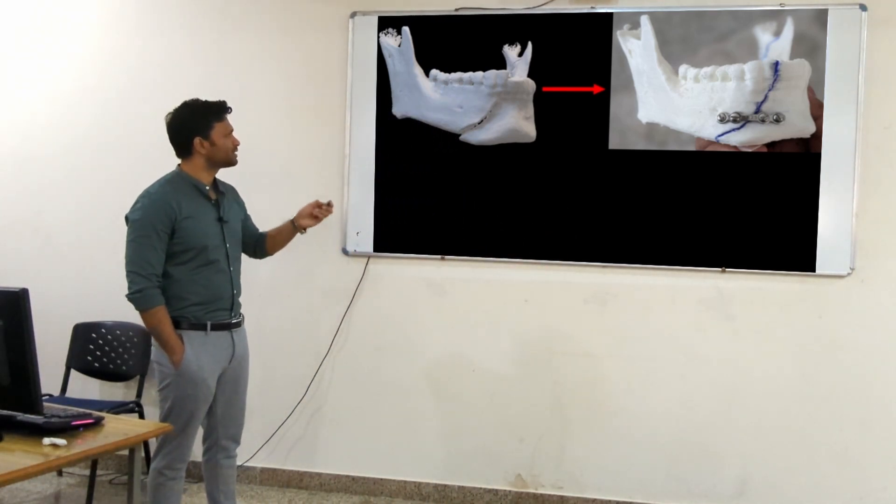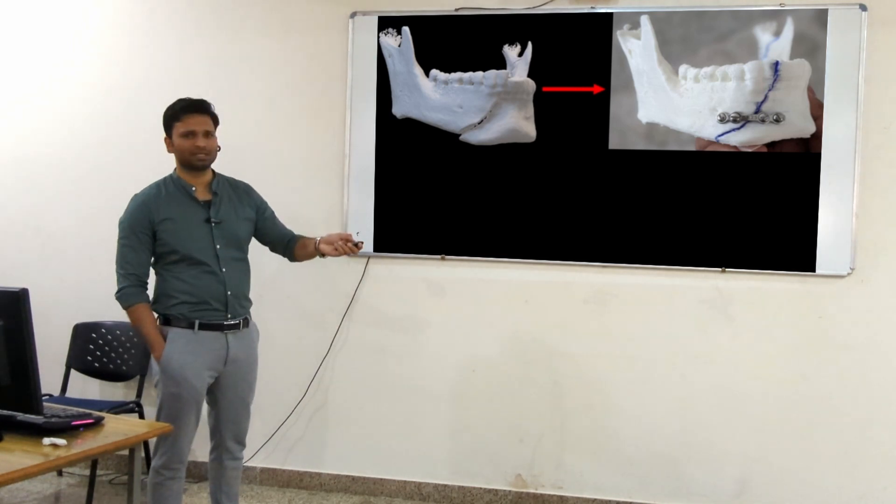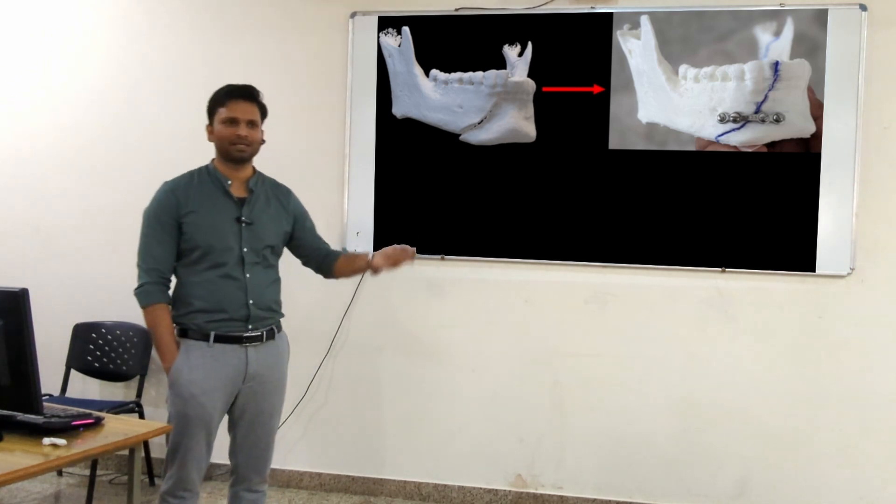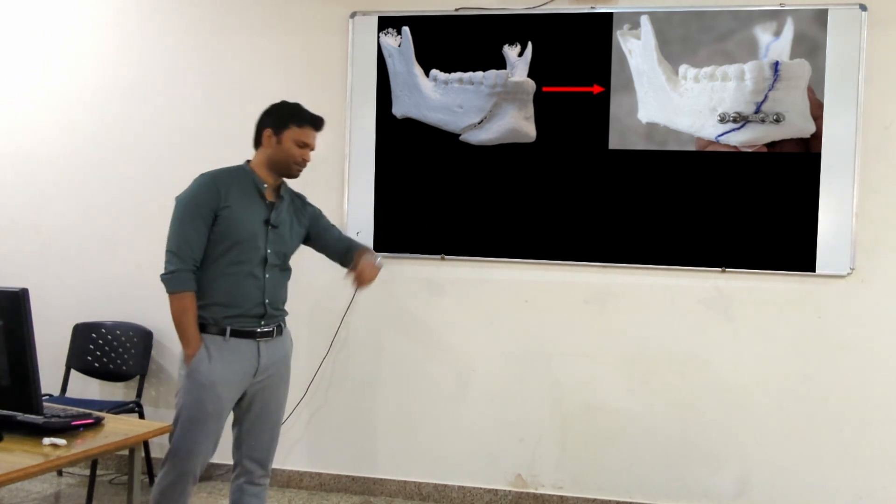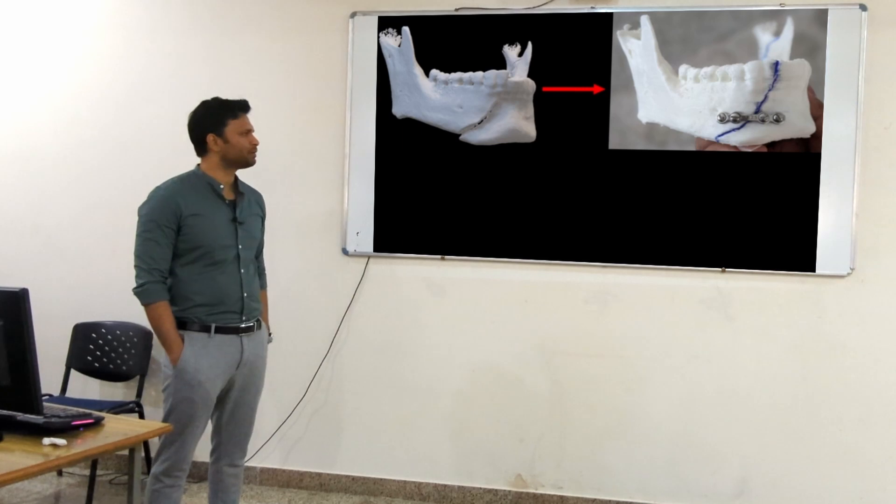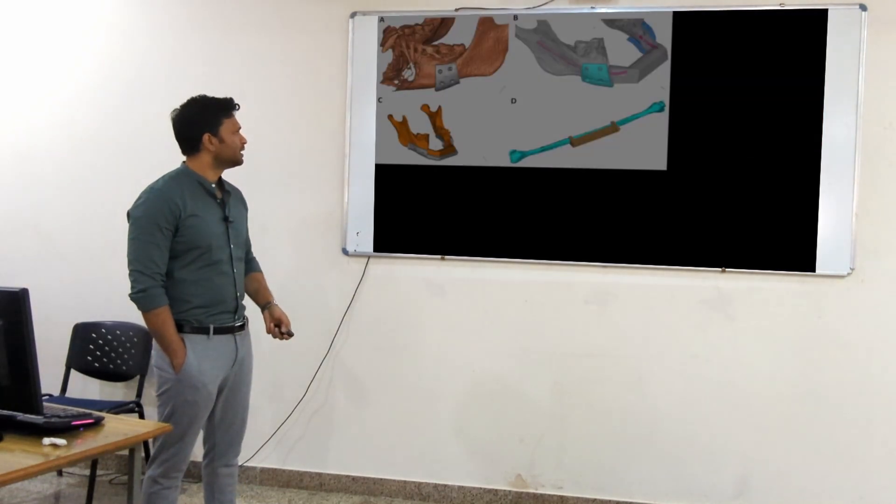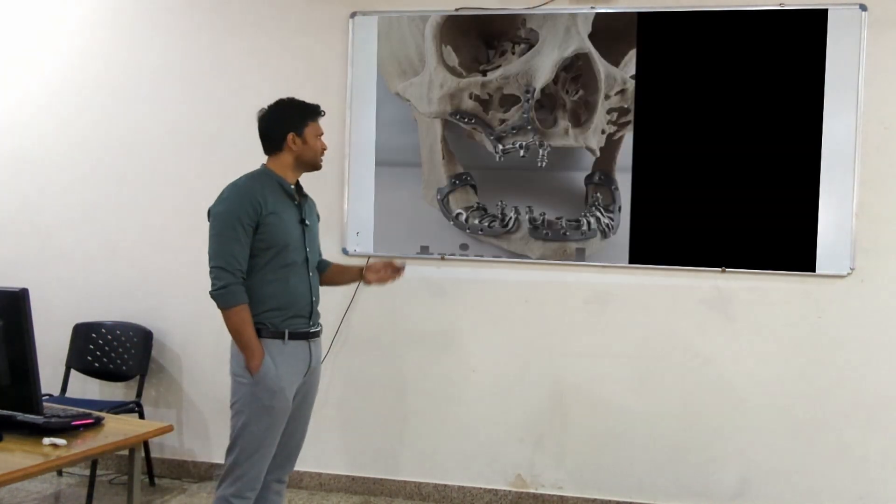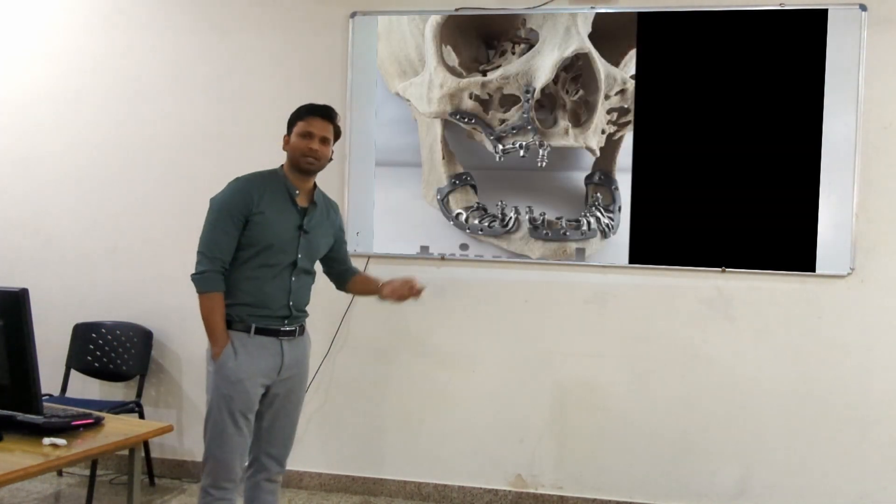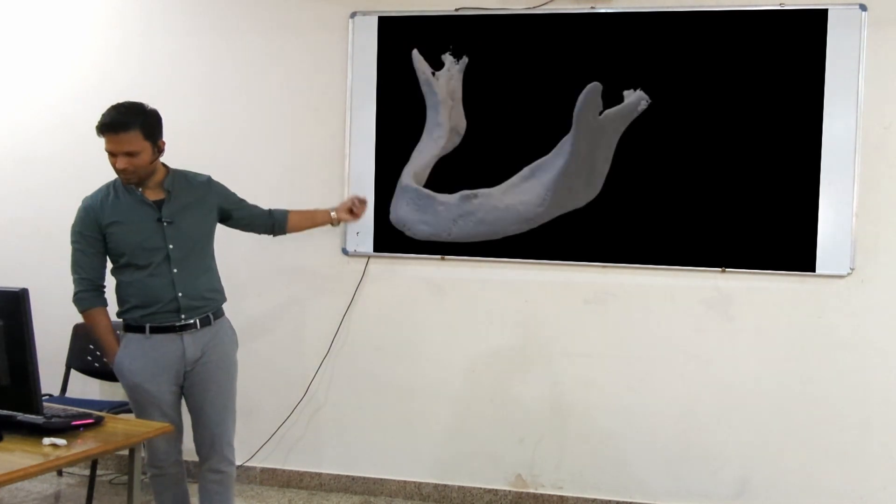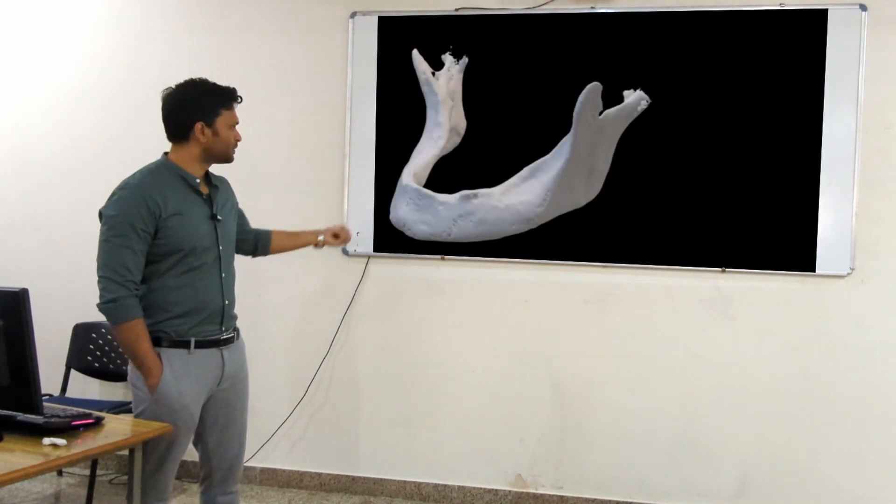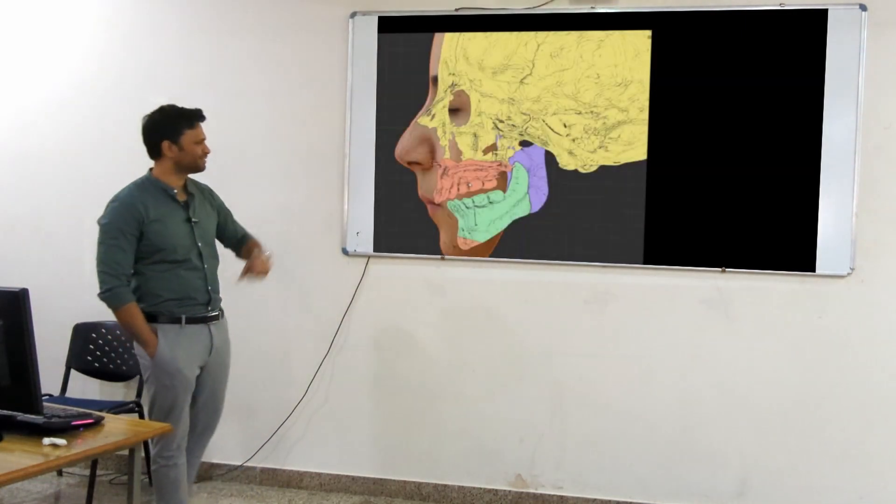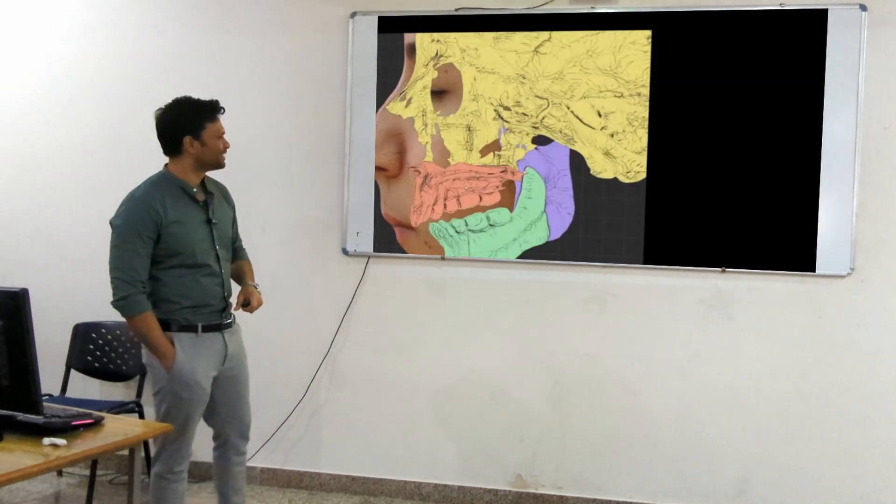You saw from this to this - it was because of the middle procedure, 3D segmentation, and then I printed the model. The pre-bent plate was adapted and placed on the model. This also requires 3D segmentation. This again is dependent on segmentation. Same thing - from this to this, segmentation.